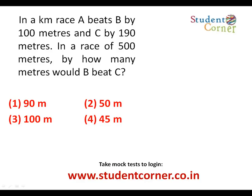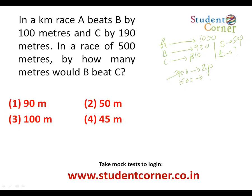This is about the running race. In a 1 km race, which is 1000 meters, A beats B by 100 meters so B runs 900 meters, and A beats C by 110 meters so C runs 890 meters — meaning when B runs 900, C runs 810. In a 500 meter race, by how many meters does B beat C? When B runs 500, C runs 500 into 810 divided by 900, which equals 450 meters. So B beats C by 500 minus 450 equals 50 meters. The second option is the answer.